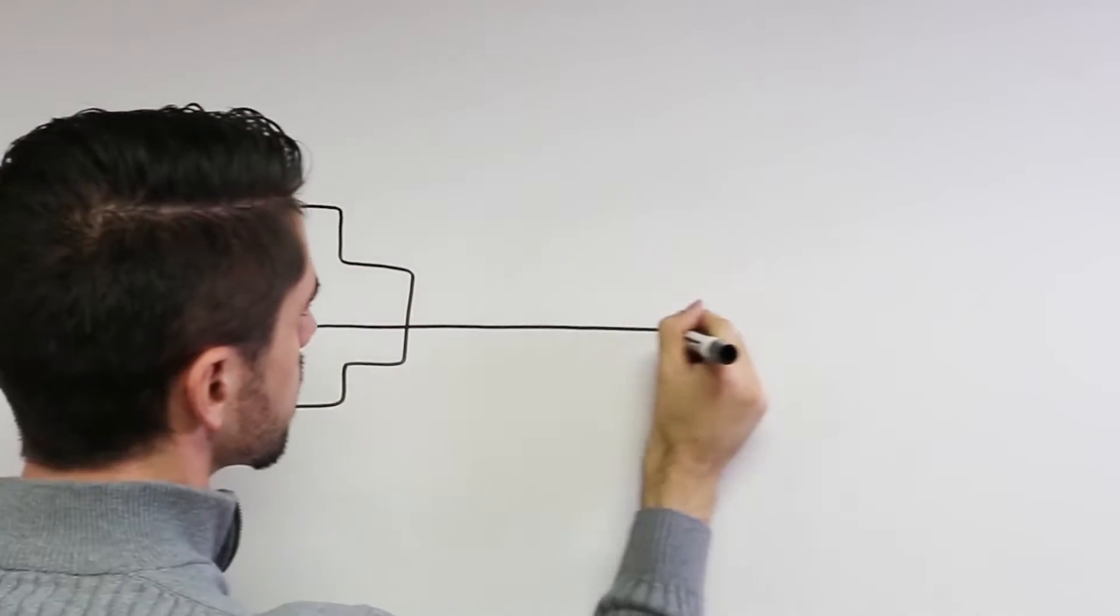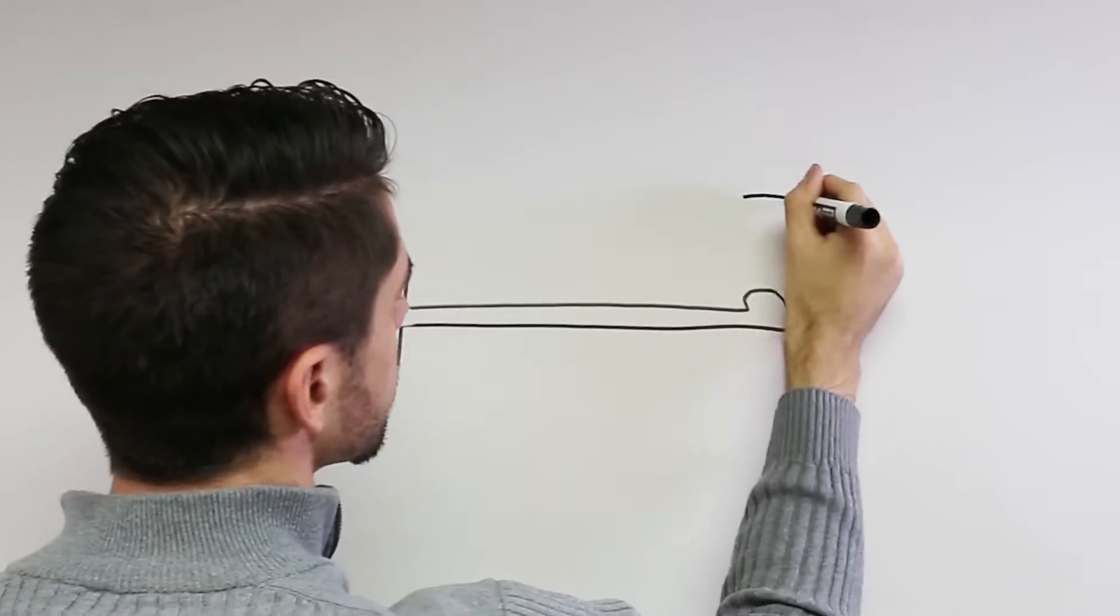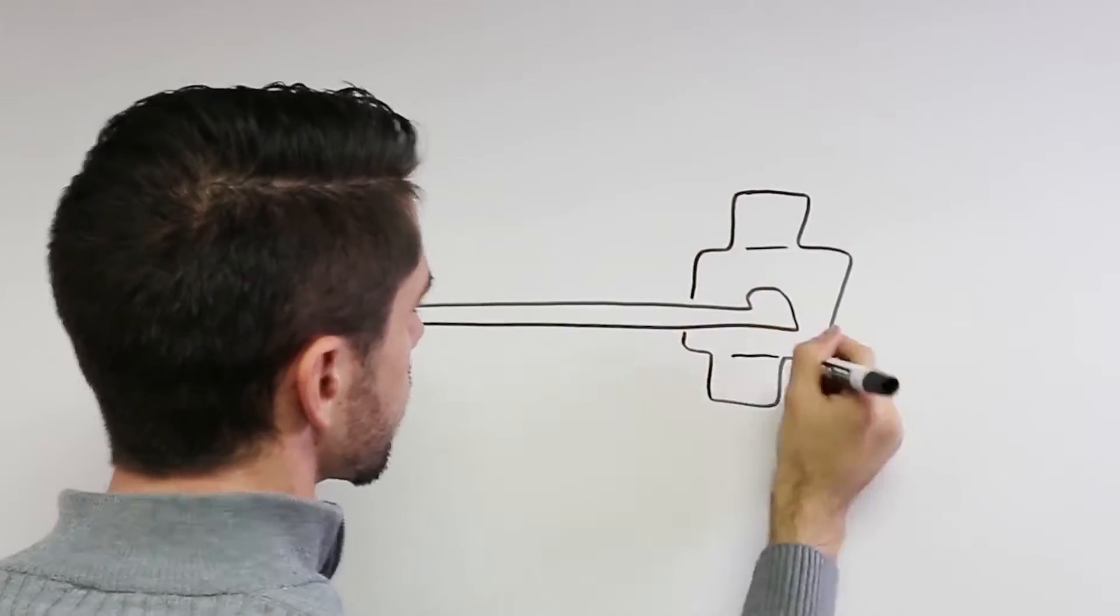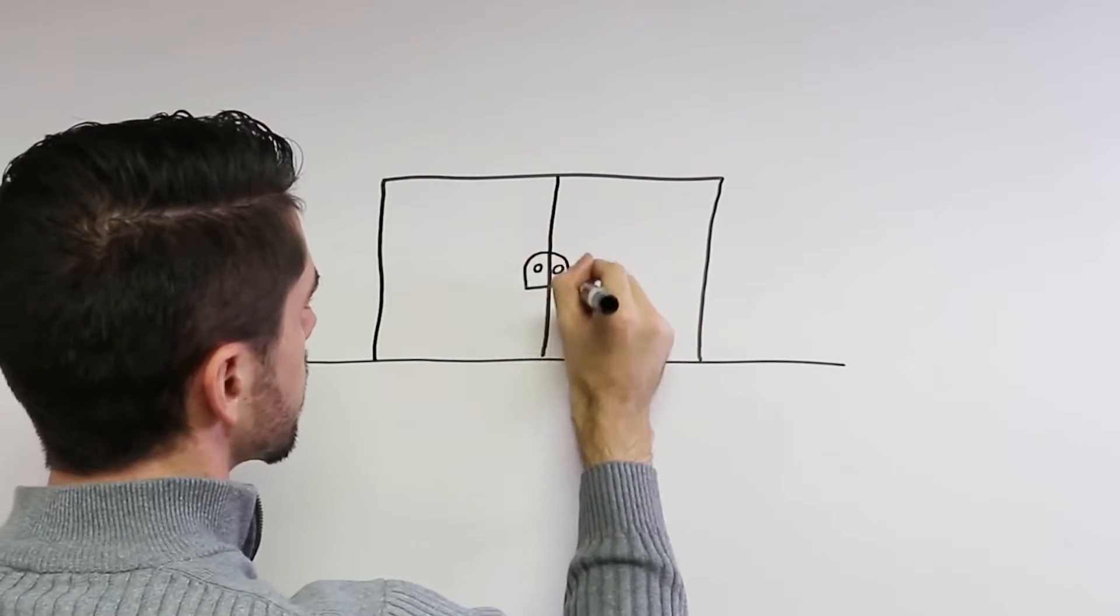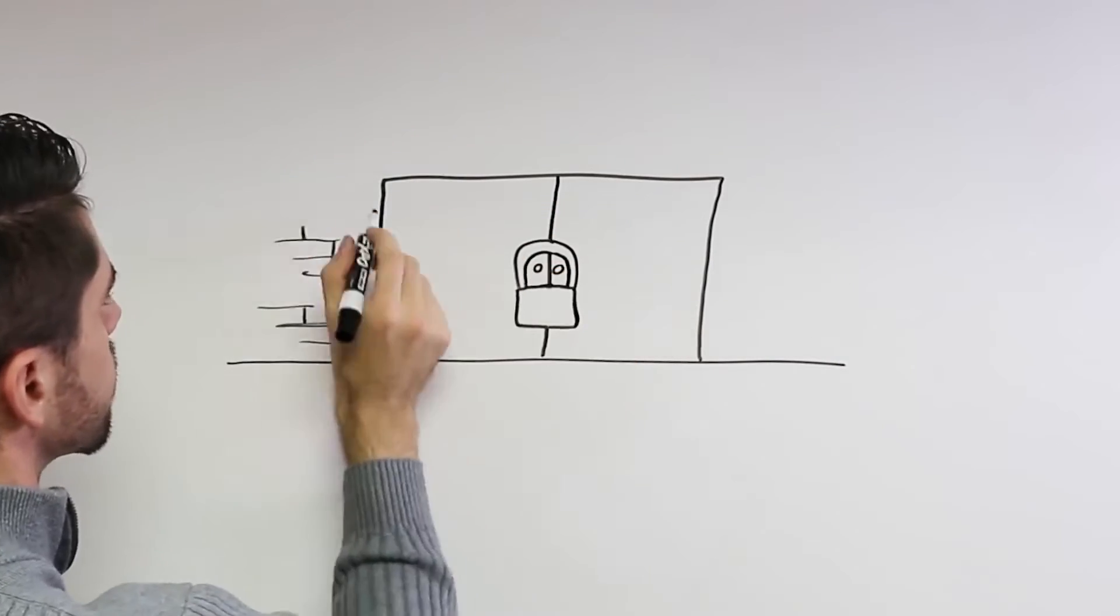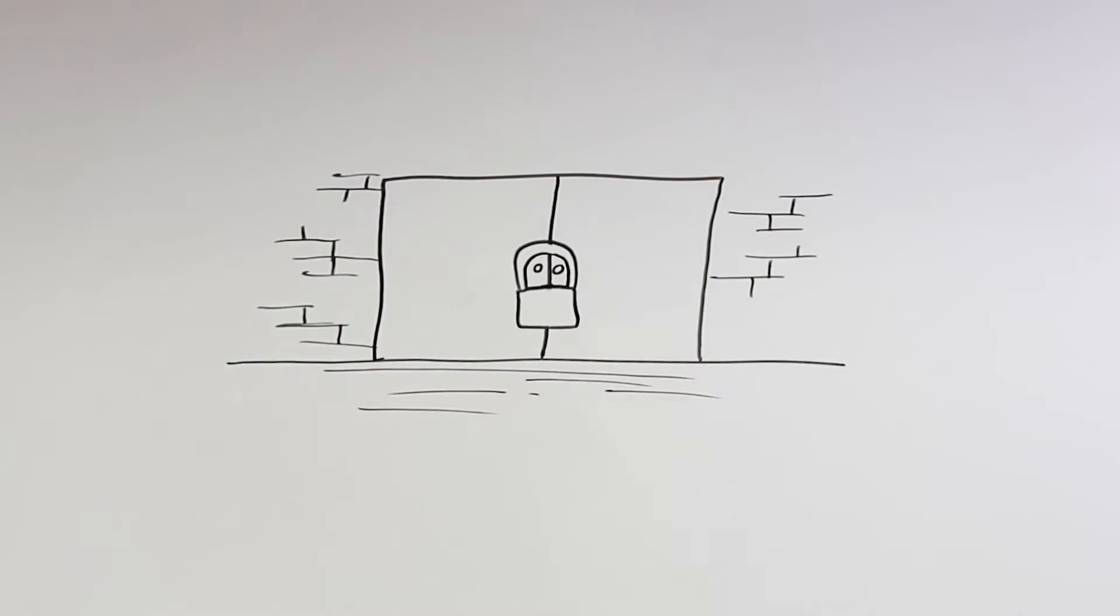A company called Von Dupren introduced exit devices in the United States in 1908 to make it so people could get out of a public building in an emergency. Prior to this, doors in public places were often in-swinging doors and side entrances and exits were often kept locked.